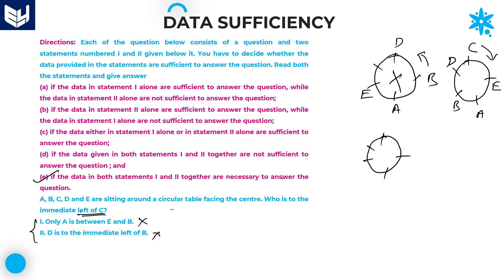So the answer is option E. Data in both the statements together are required to get the answer. Here we had two possible diagrams; the second condition eliminates the first diagram, so the second diagram is true. Your required answer is: data in both the statements are necessary to get the answer — option E is the right answer. I hope you enjoyed the session. Thank you very much for watching.